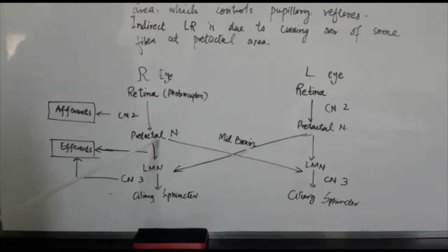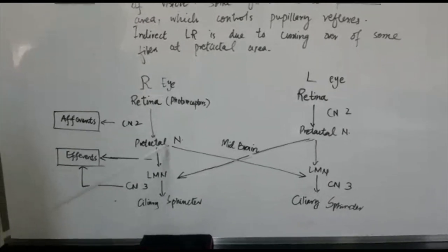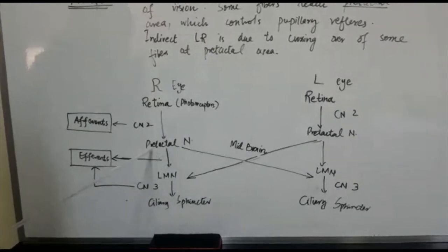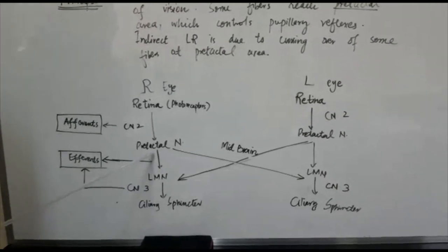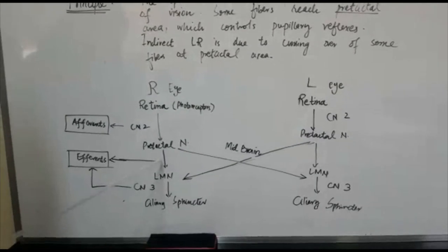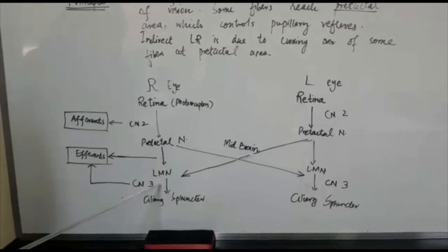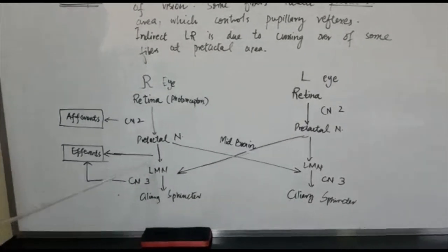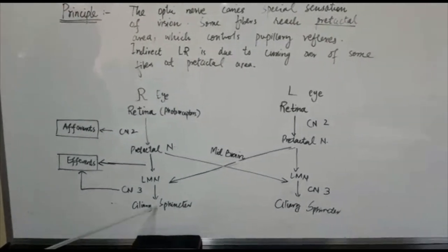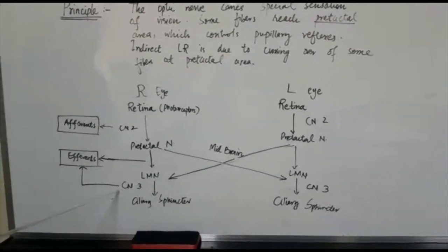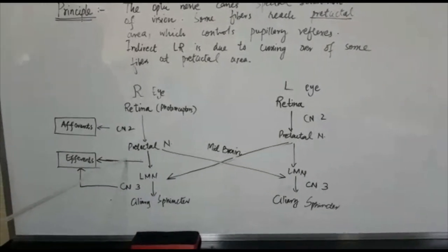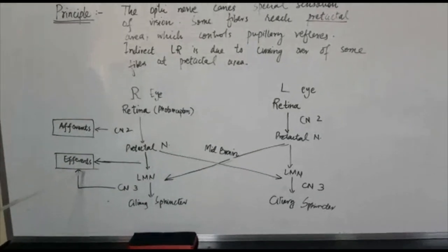At the pretectal nucleus, the fibers cross over. The efferent fibers from the pretectal nucleus reach the ciliary sphincter via lower motor neurons. The efferent fibers to the ciliary sphincters are carried by third cranial nerve.